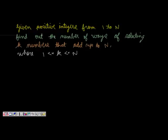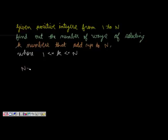The question is: given positive integers from 1 to n, find out the number of ways of selecting k numbers from that list such that they add up to n, where k is from 1 to n. So basically we are given a list of numbers from 1 to n.